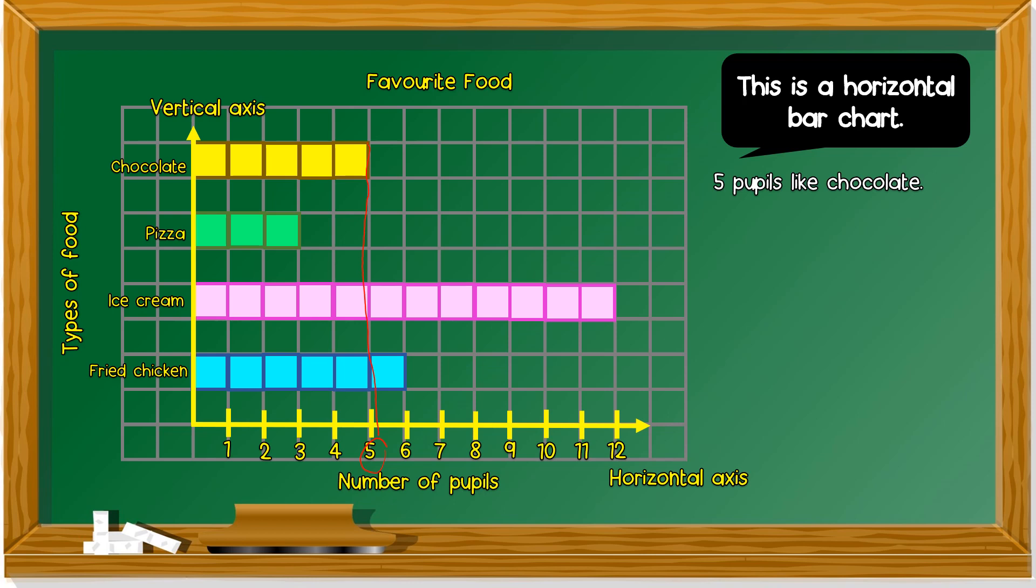How about pizza? Three pupils like pizza. Ice cream. Twelve pupils like ice cream. Next one. Next one. Fried chicken. Six pupils like fried chicken.